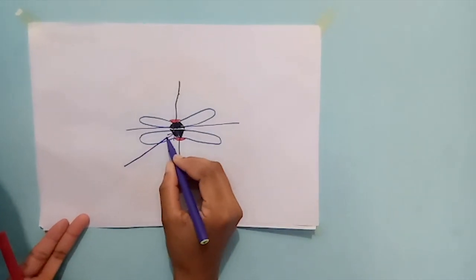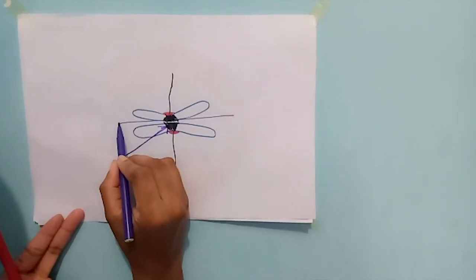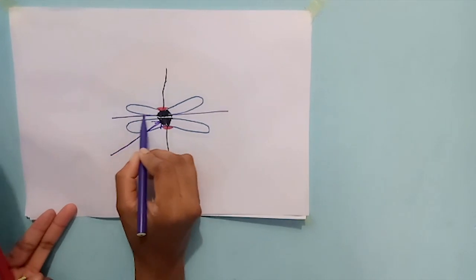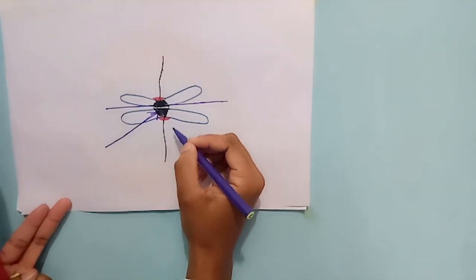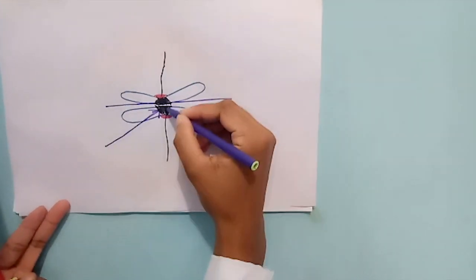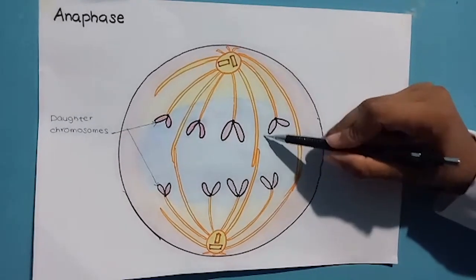After metaphase, the cell undergoes anaphase. Anaphase is the shortest stage of mitosis. The centromere is formed by cohesin protein. Anaphase begins when the cohesin proteins are cleaved, allowing the two sister chromatids of each pair to part. Each chromatid thus becomes an independent chromosome.